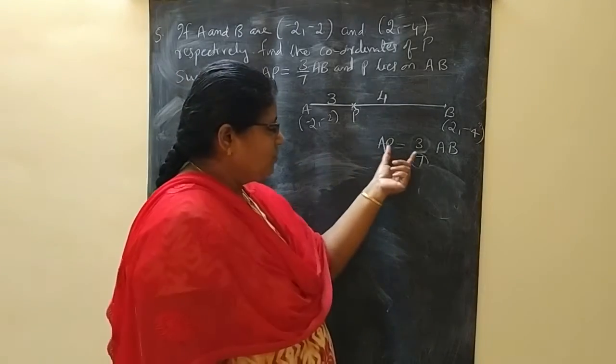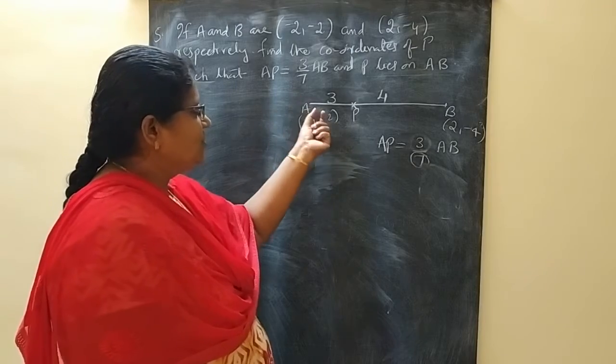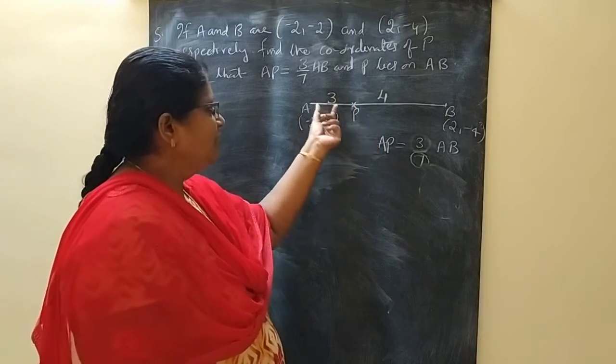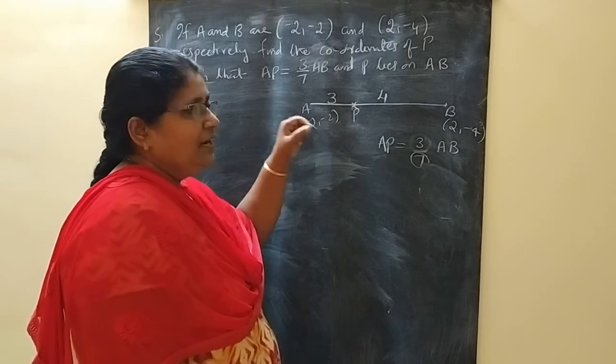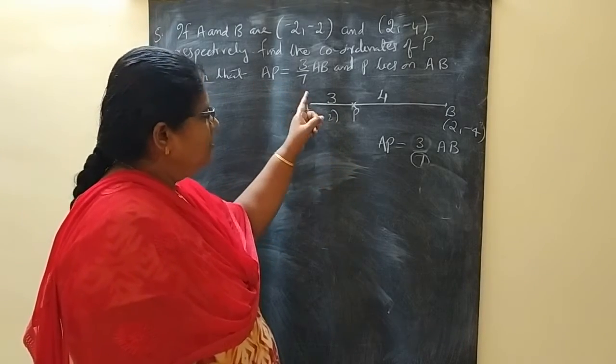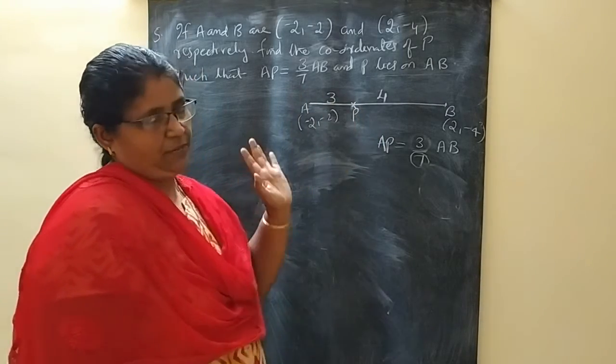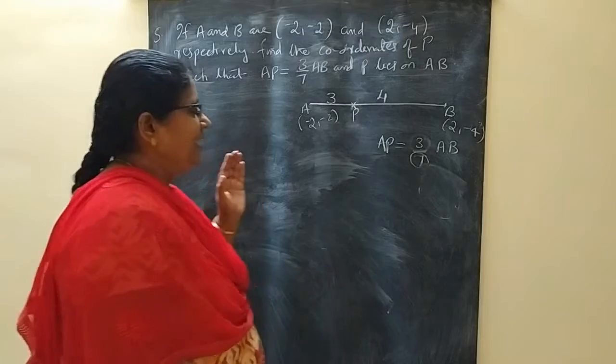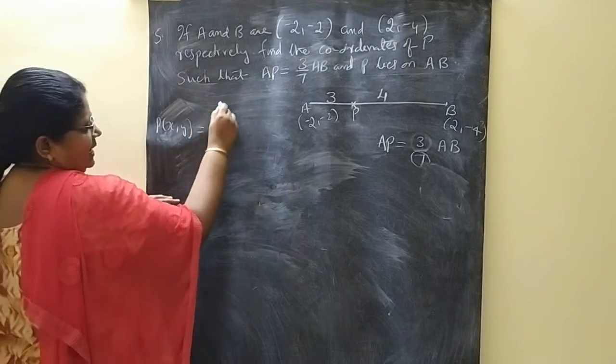Whenever you are getting a question like this, from the question you have to decide the ratio. If ratio is wrong, then answer will be wrong. Think a little time and take the correct ratio. If we get the ratio, then we can apply the section formula.